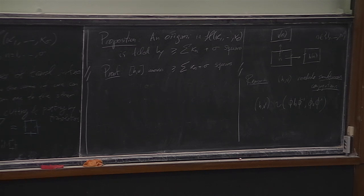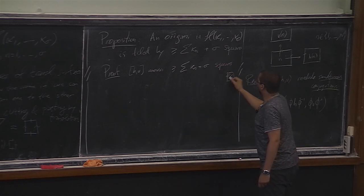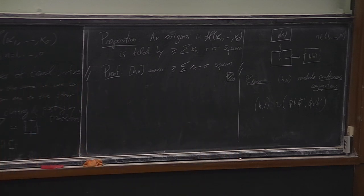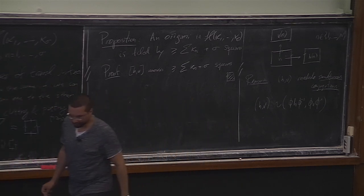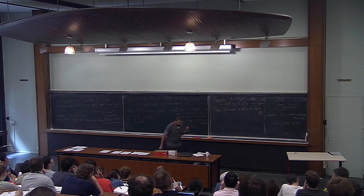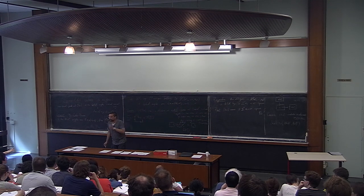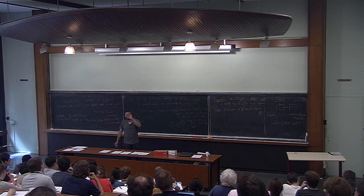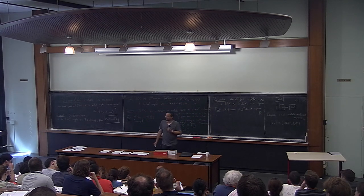You have the opportunity during the conference to ask many people about this development. Another remark is that these complex orbifolds — the strata — are not always connected. Strata are not connected in general, but connected components were classified, and the punchline is that there are at most three connected components. So it's not far from being connected; we understand precisely when these components show up.